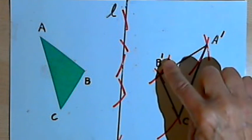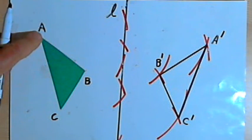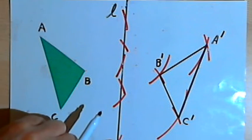And I've got triangle A prime, B prime, C prime, which is a reflection of triangle ABC in line L.